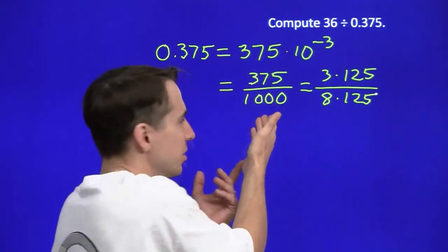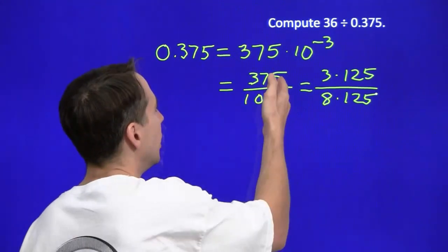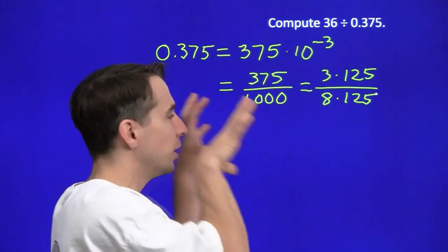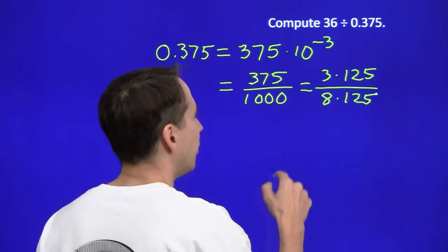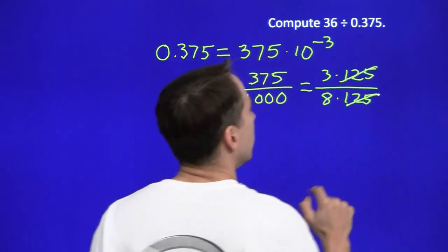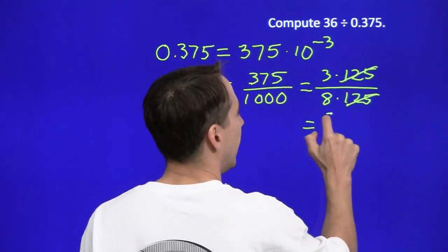And if you didn't see that right away, you could just prime factorize this. This one's obviously 2 cubed times 5 cubed. And the one on the top, you pull out that factor of 3 and the 125 will jump out at you. And that's 5 cubed as well. Knock that out, and we're left with 3 eighths.